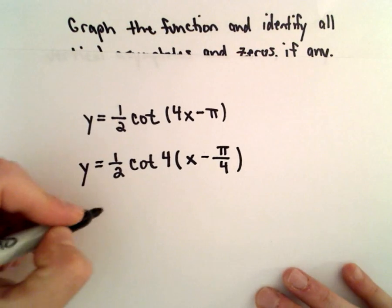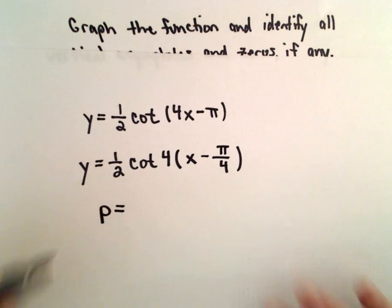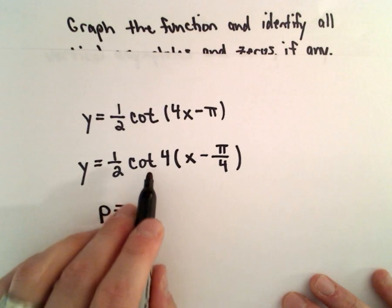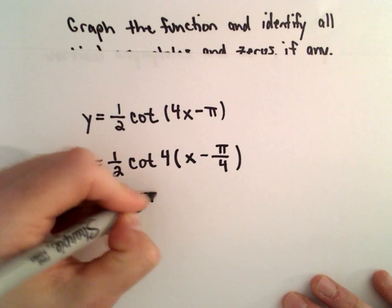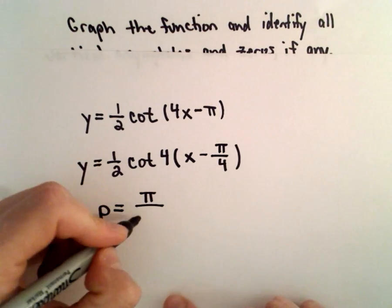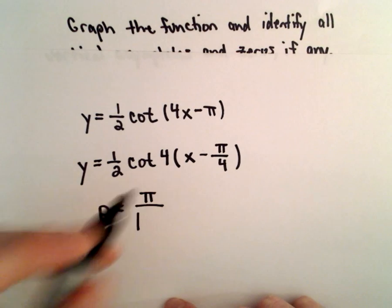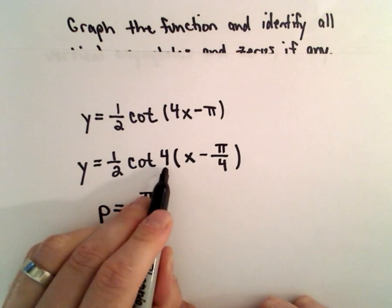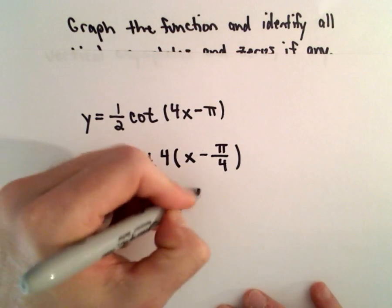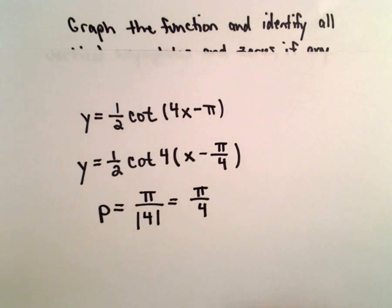So I'm doing that to determine the period. Recall that the period of cotangent is equal to just pi, and we'll divide that by the absolute value of b, which in this case is positive 4. So the period is going to equal pi over 4.